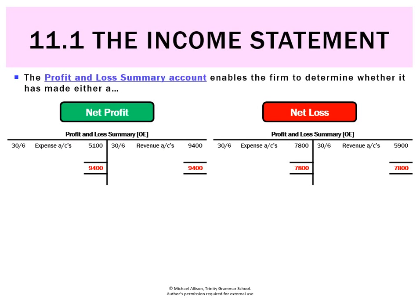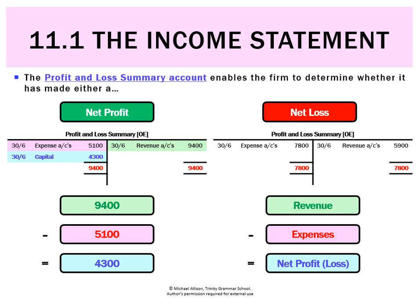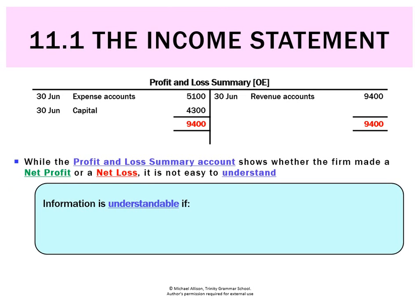The profit/loss summary account tells us whether we made a profit or loss. On the left you can see revenues of $9,400 and expenses of $5,100 — that's a profit of $4,300. On the right we have revenues of $5,900 and expenses of $7,800, giving a net loss of $900. But if we can already tell profit or loss from that account, why do we even need an income statement?